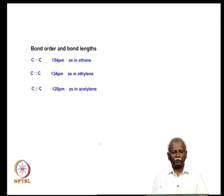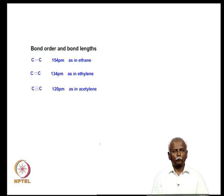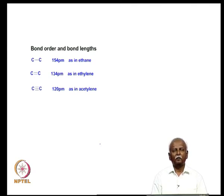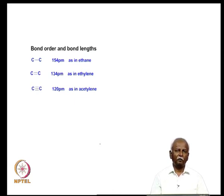Looking at bond distances: in ethane the C–C bond is about 154 pm, reduced to 134 pm in ethylene (the archetypal double bond), and further to about 120 pm for a triple bond. There is an empirical linear relationship between the observed bond distance and the bond order. Subtracting 0.18p from 1.57 Å gives an estimate of the partial pi bond order.